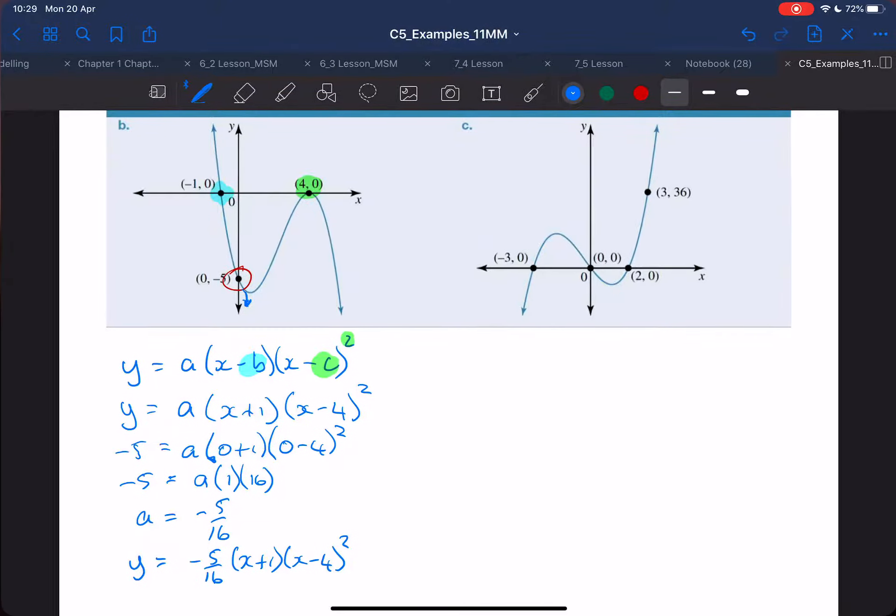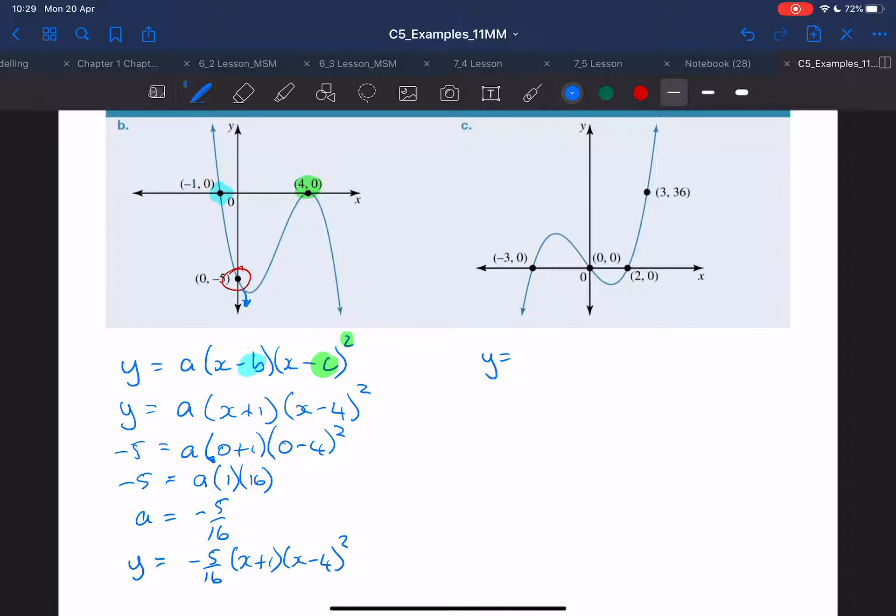Because I have three points, y equals a, x minus b, x minus c, x minus d, because there's three intercepts. I'm going to say a, x, and my first point I'm going to use is going to be this one.